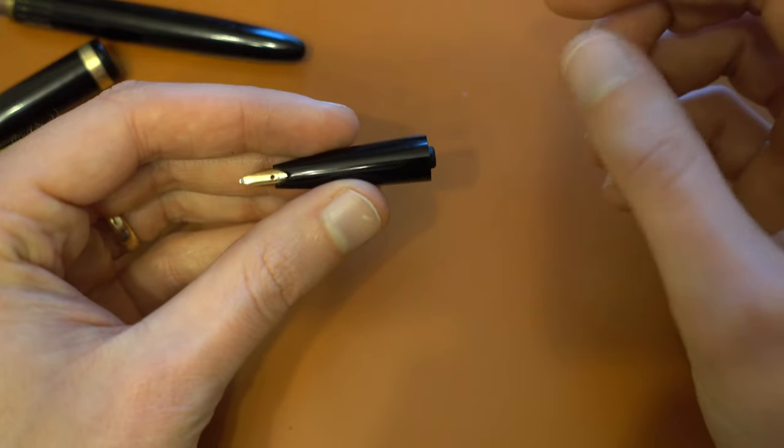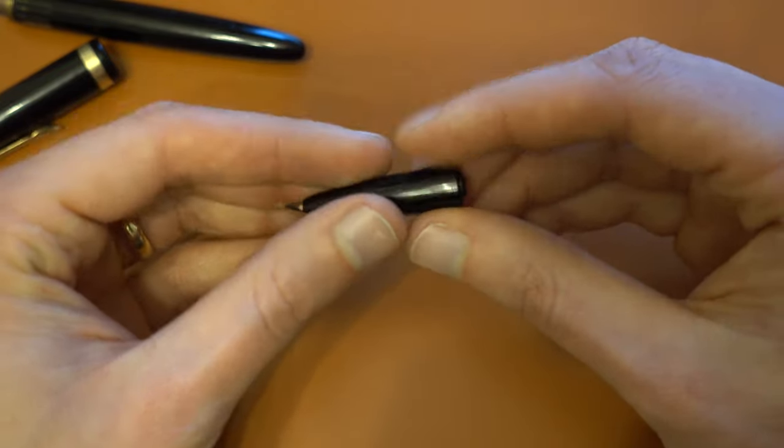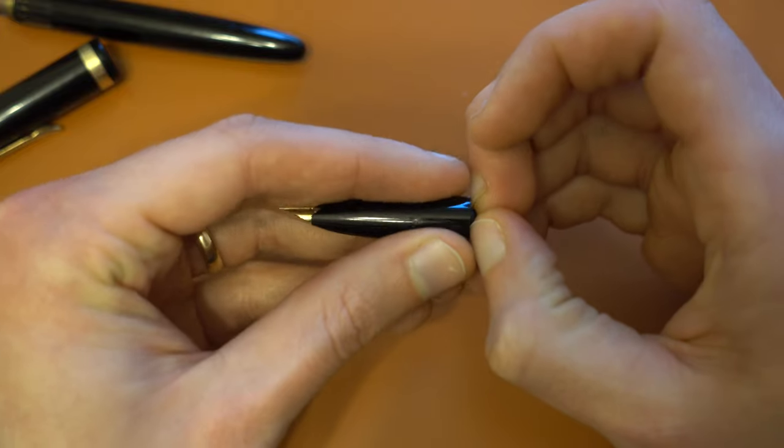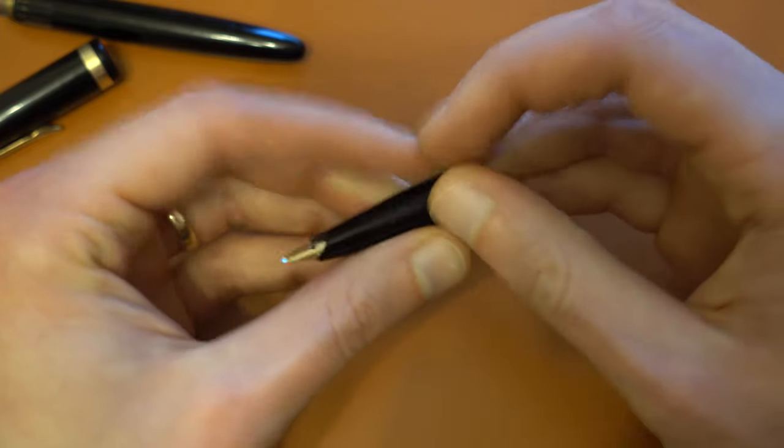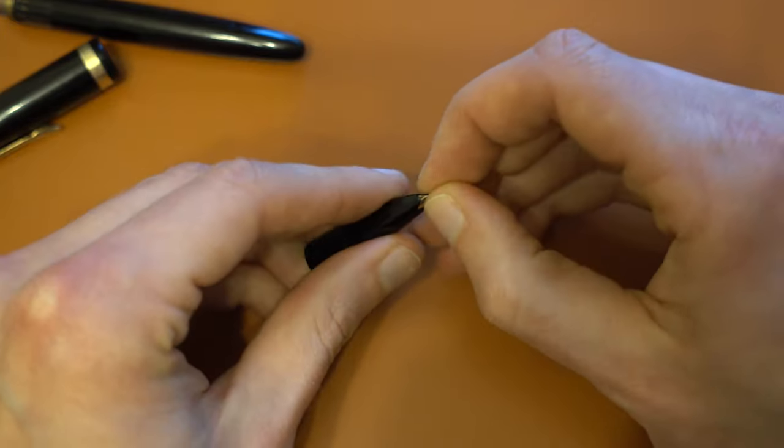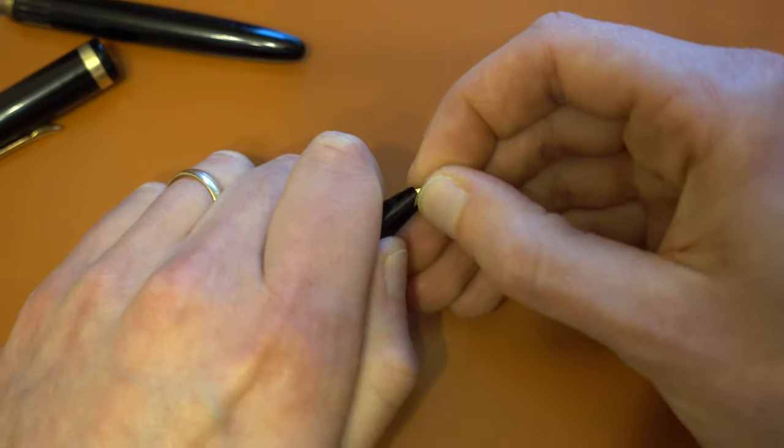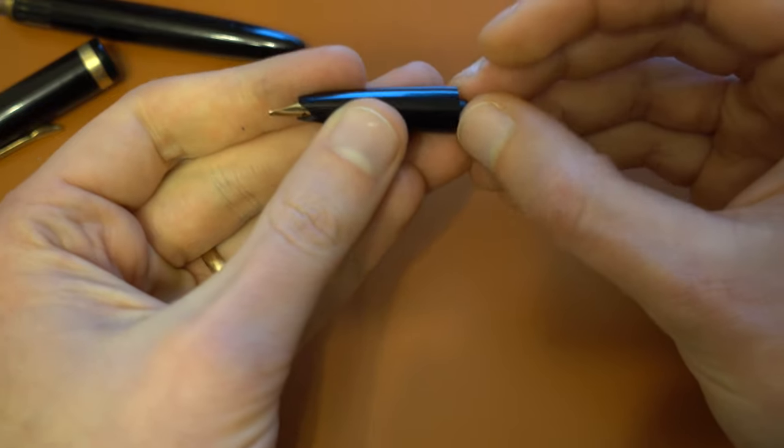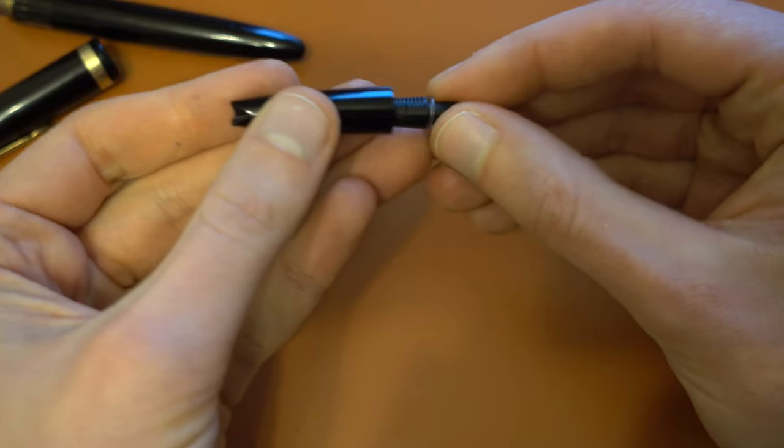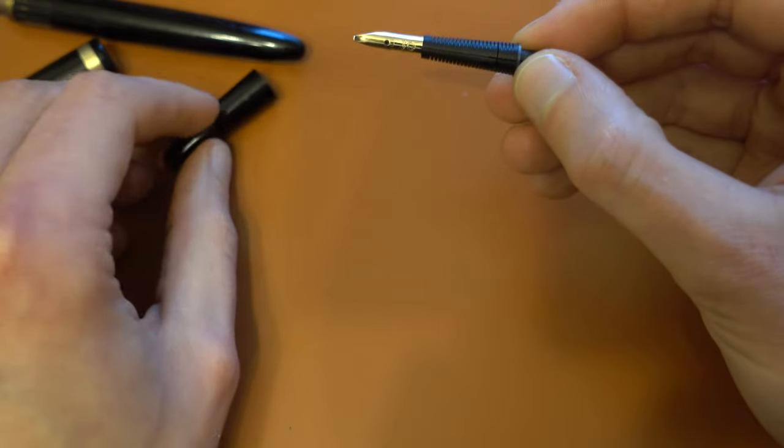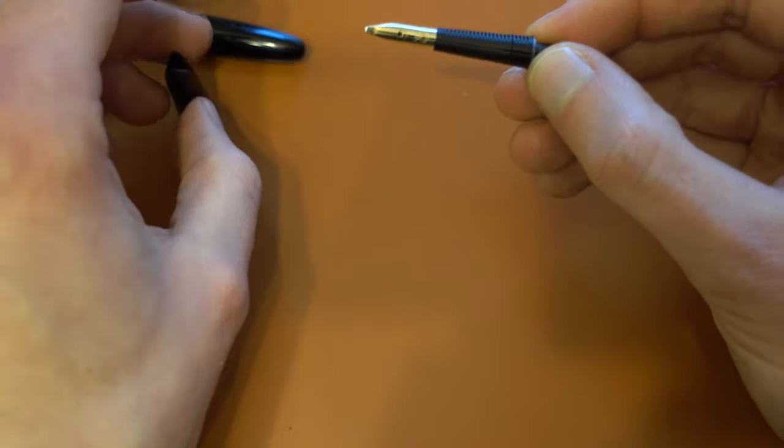But if you get a pen like this I would assume that most likely you don't have to do anything. So this is the nib unit. And the nib simply pulls off. Maybe you have to push a bit. And out comes the nib.